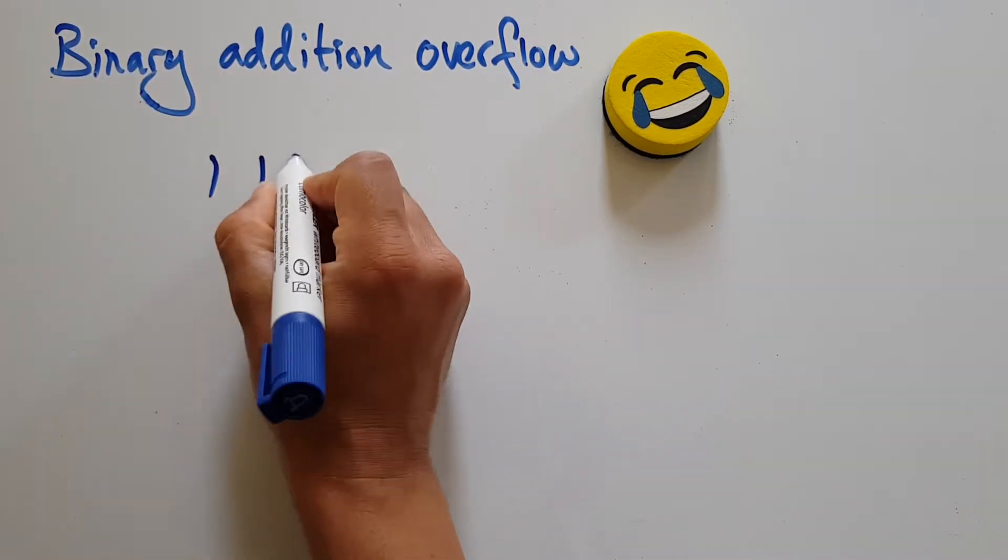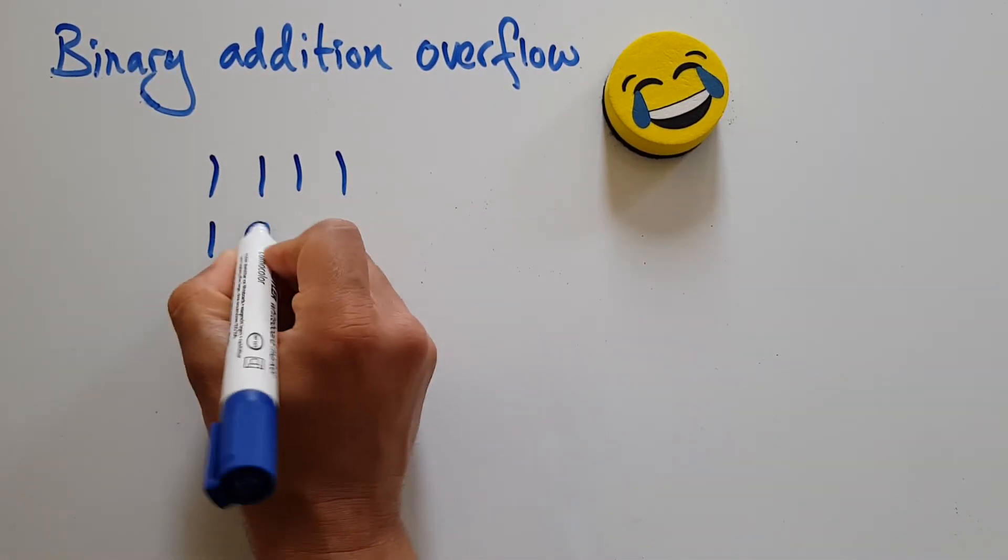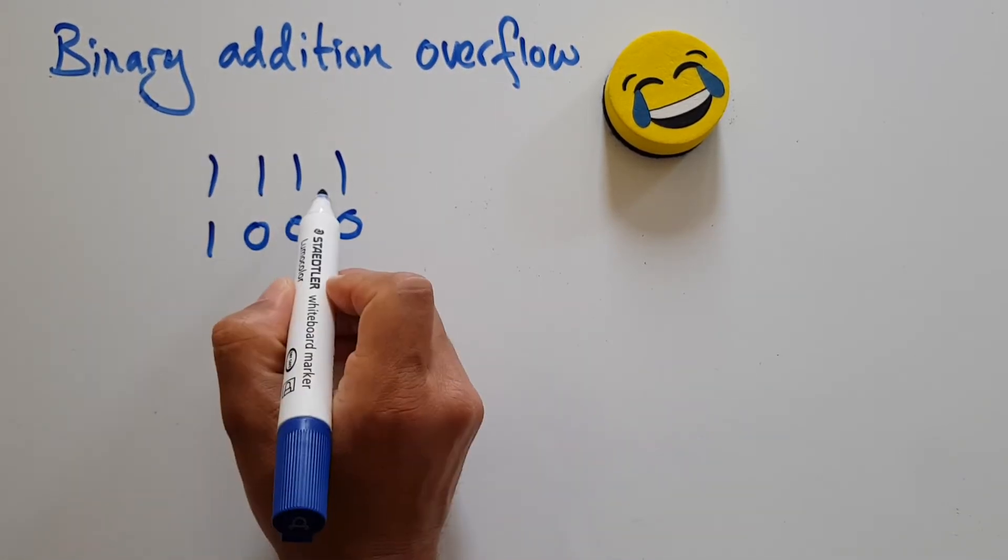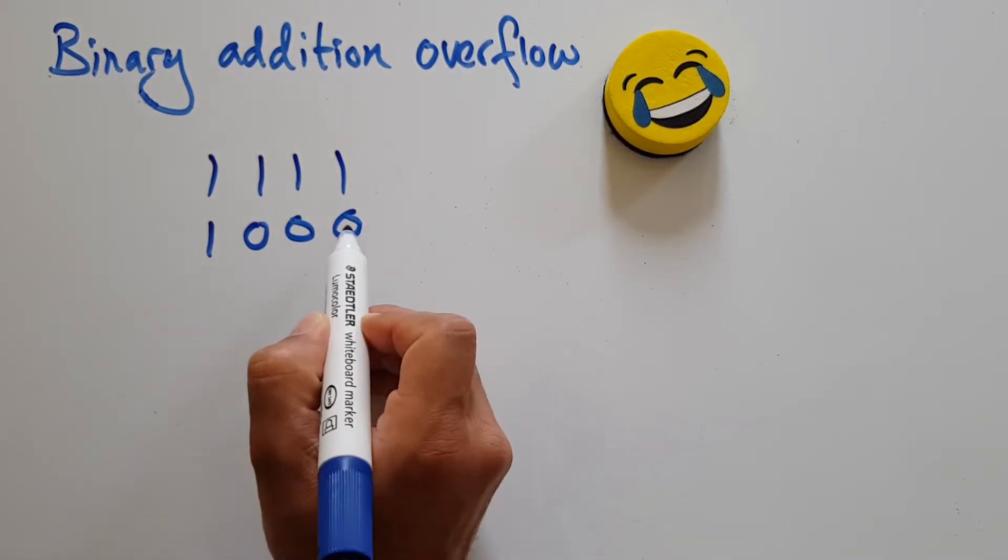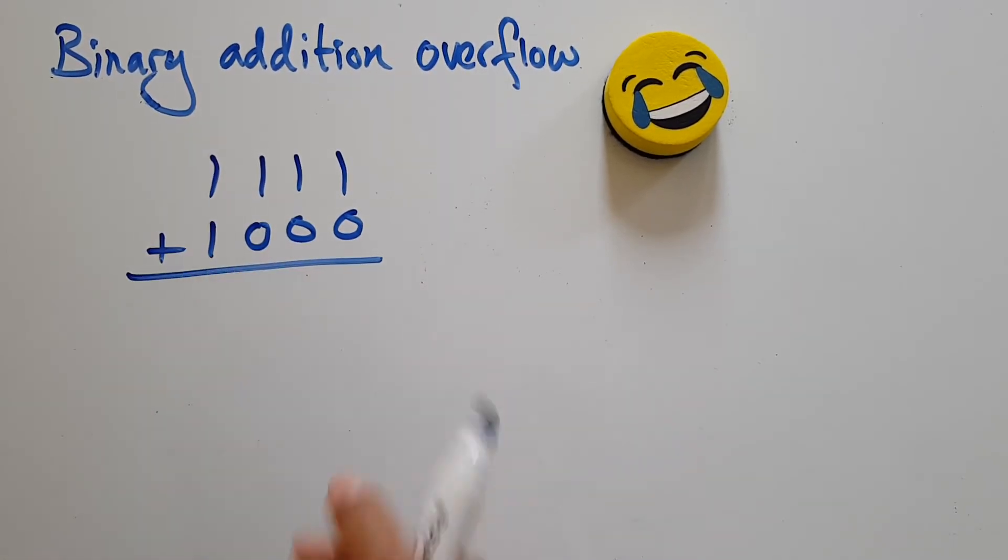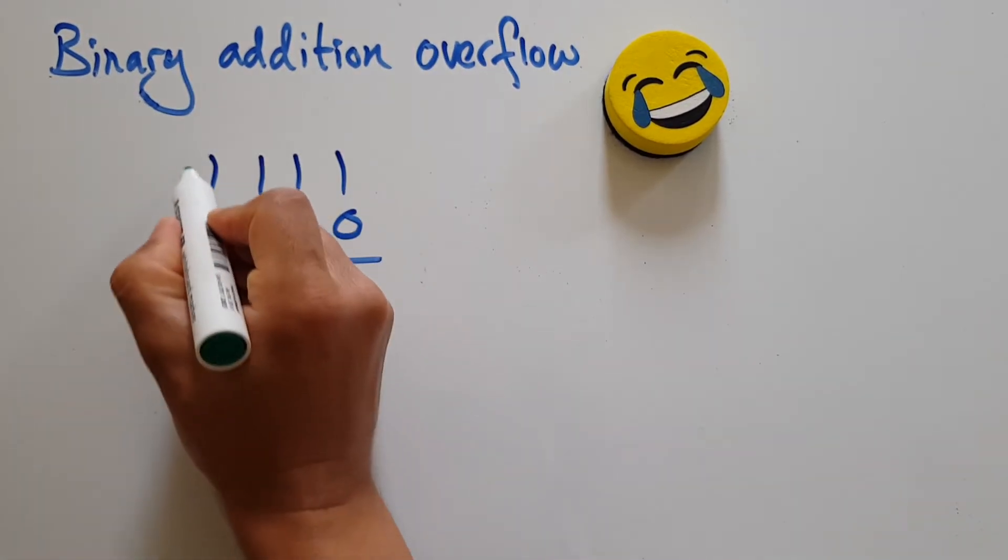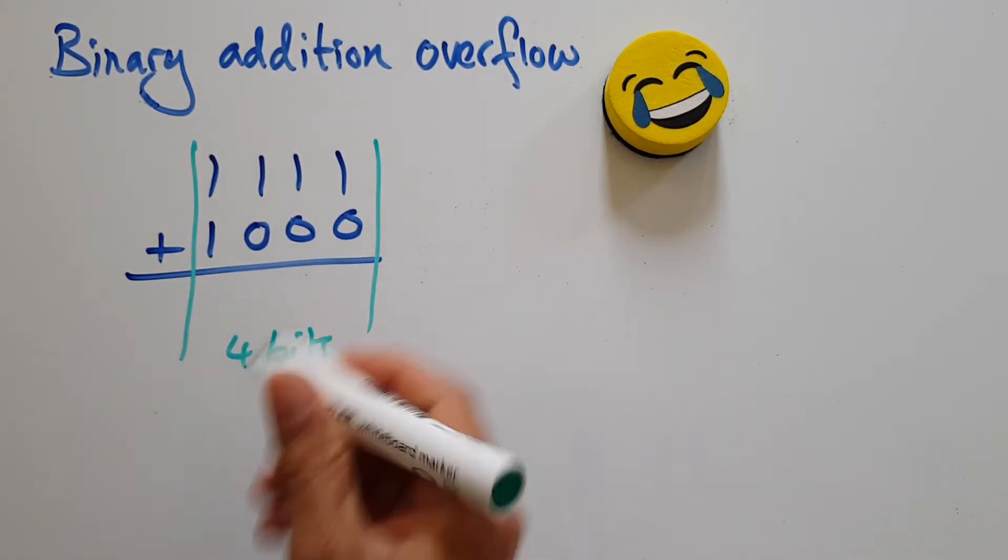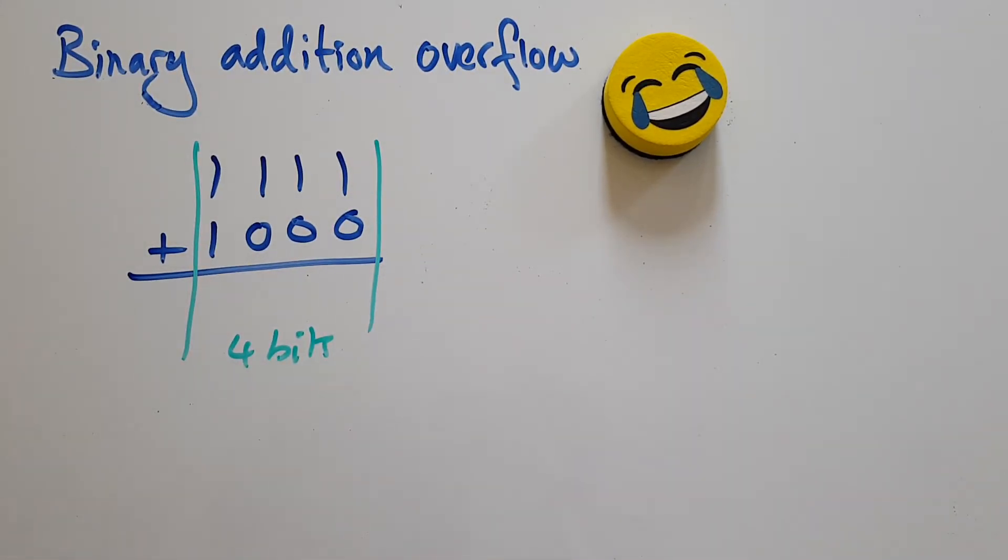Let's say I want to add these four-bit numbers or nibbles together. That's four bits, that's four bits, and I've only allocated four bits for the answer, because anything other than that I'll run out of space.